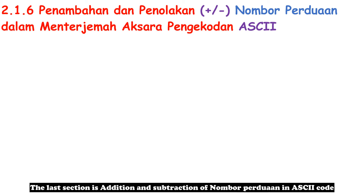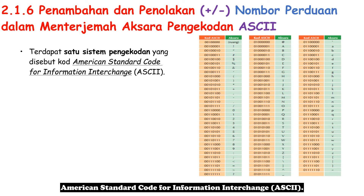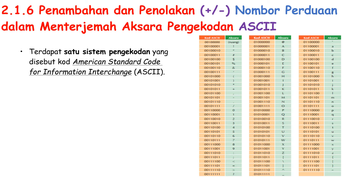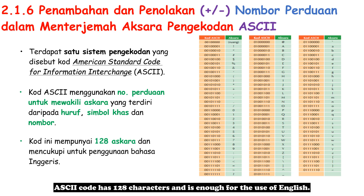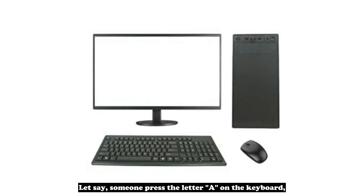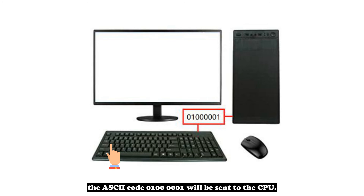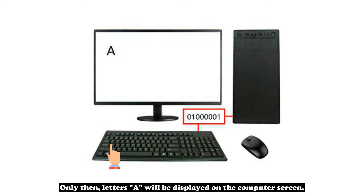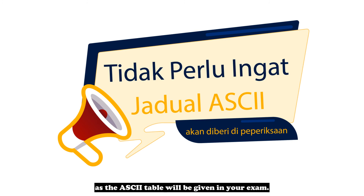The last section is addition and subtraction of Nombor Perduaan in ASCII code. First, we need to know what ASCII code is. There is a coding system called the American Standard Code for Information Interchange — ASCII. ASCII code uses Nombor Perduaan to represent a character, which consists of letters, numbers, and special symbols. ASCII code has 128 characters and is enough for the use of English. For example, when someone presses the letter A on the keyboard, the ASCII code 01000001 is sent to the CPU, and then the letter A is displayed on the screen. The ASCII table will be given in your exam.